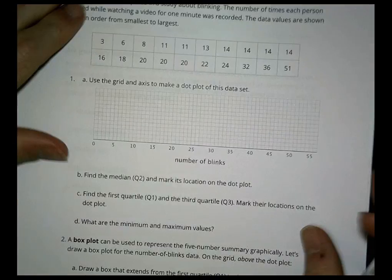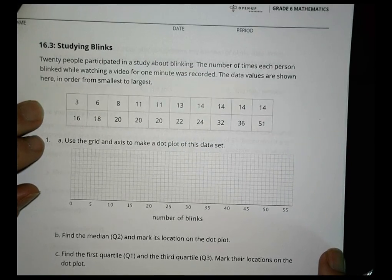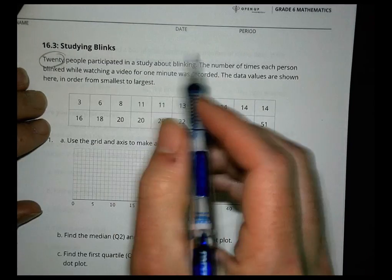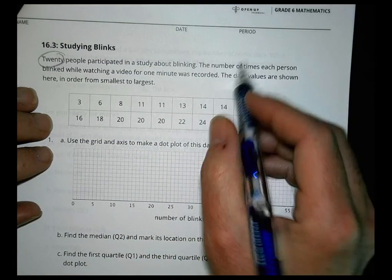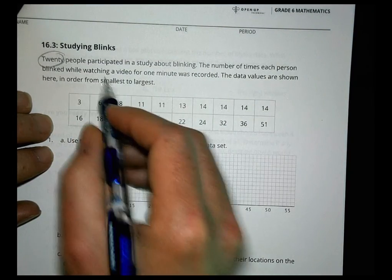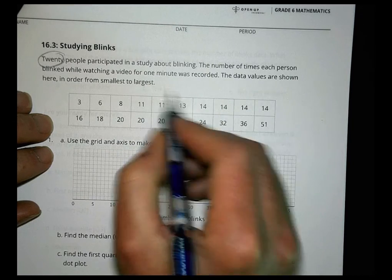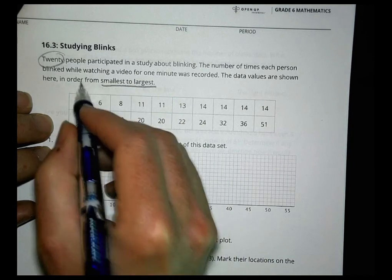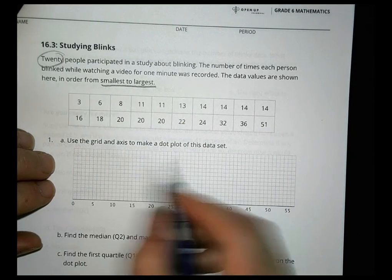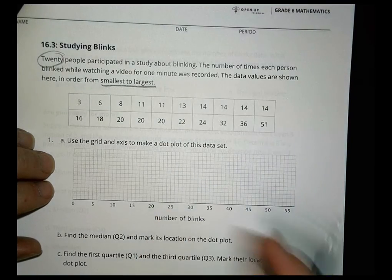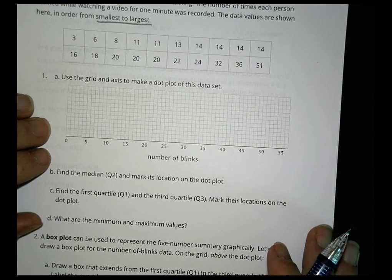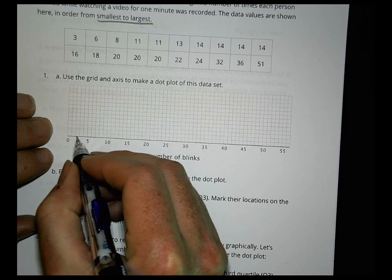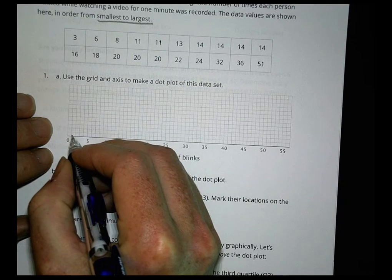Okay, so on the next page here, studying blinks. It says 20 people participated in a study about blinking. The number of times each person blinked while watching a video for one minute was recorded. And the data values are seen here in order from smallest to largest. I like it when they keep them in order. We're going to use this grid to make a dot plot of the data set.